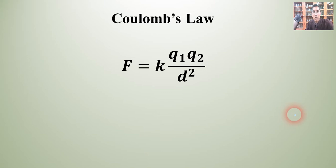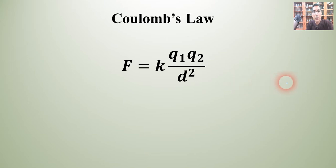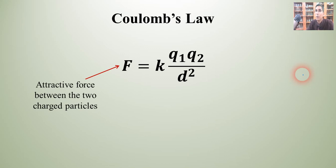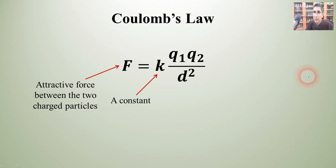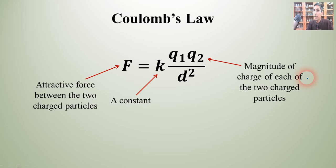Now, if this equation looks intimidating, don't worry too much about it, because in AP Chemistry you're almost never going to be asked to actually calculate a numerical value for force. That's what F is in Coulomb's Law. You just have to know how it works — the ideas behind it. F is an attractive force between two charged particles. K is a constant we're not going to worry about. Q1 and Q2 represent the magnitude of charge of each of the two charged particles.